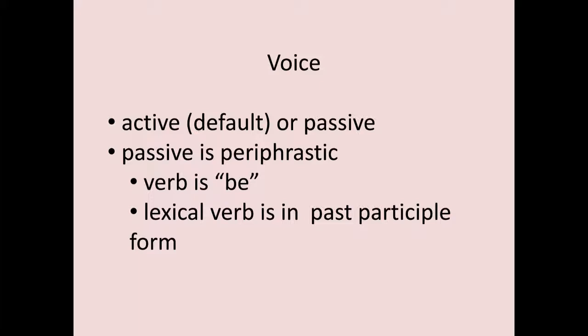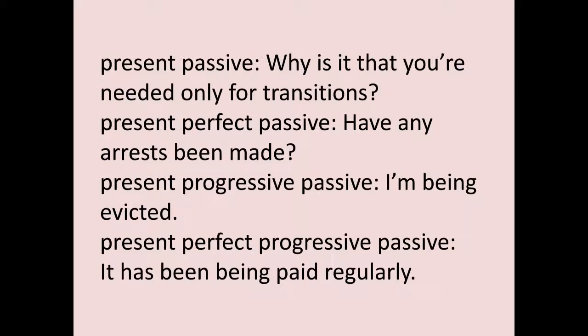The auxiliary verb is 'be,' and the lexical verb is in the past participle form. For example: 'You are needed only for transitions' — auxiliary 'are' (be verb), lexical verb 'needed' (past participle): that's passive. Do not think about the meaning — it's purely the form that tells you it's passive. The tense is identified from the auxiliary verb: 'are' is present, so this is a present passive. Everything else about this clause is default — the only marked feature is that it's passive.